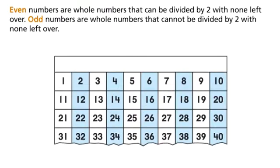Even numbers are whole numbers that can be divided by 2 with none left over. Odd numbers are whole numbers that cannot be divided by 2 with none left over.